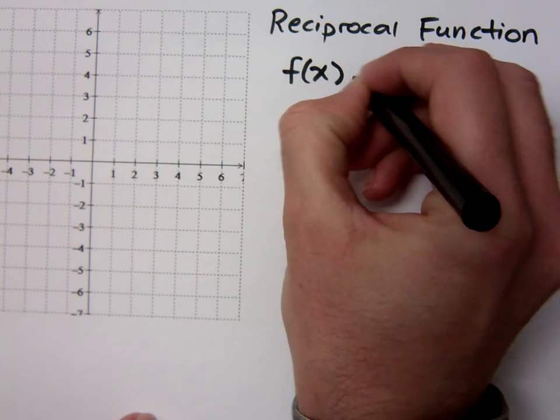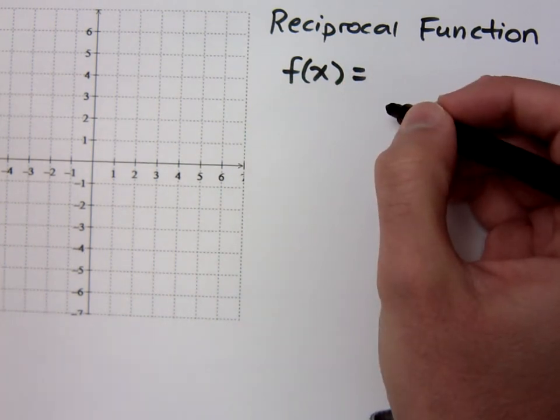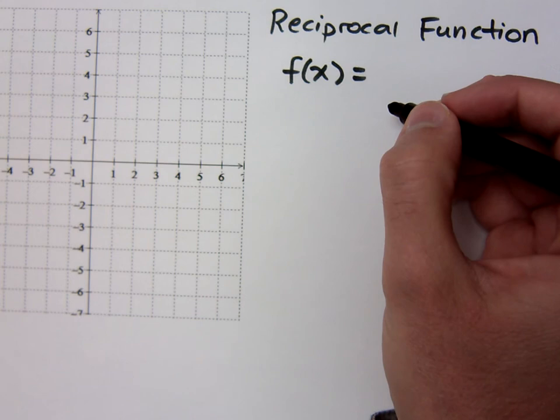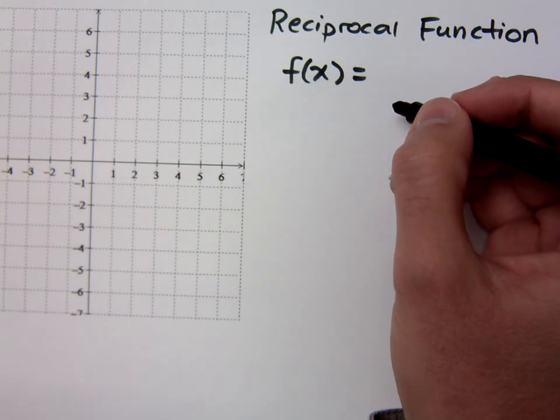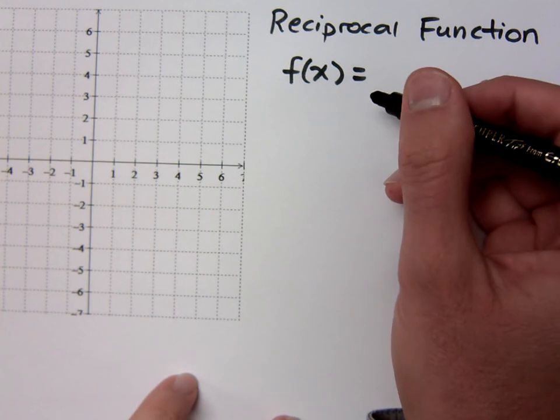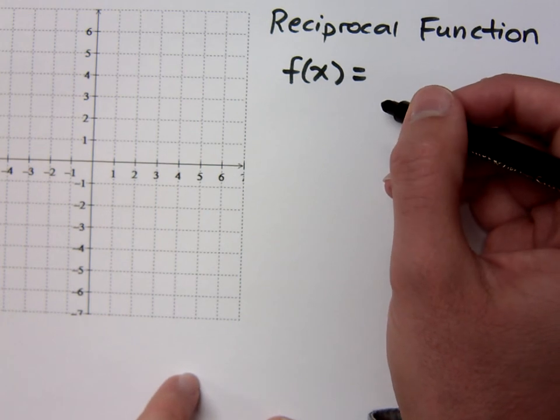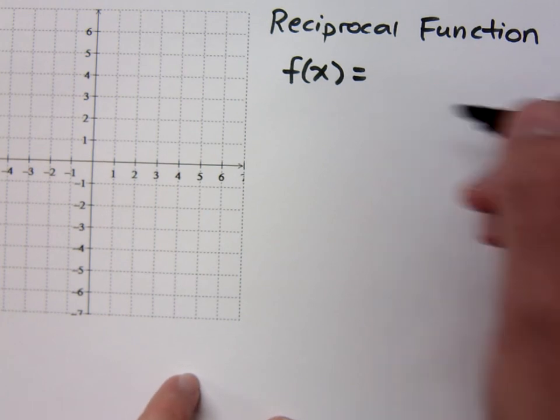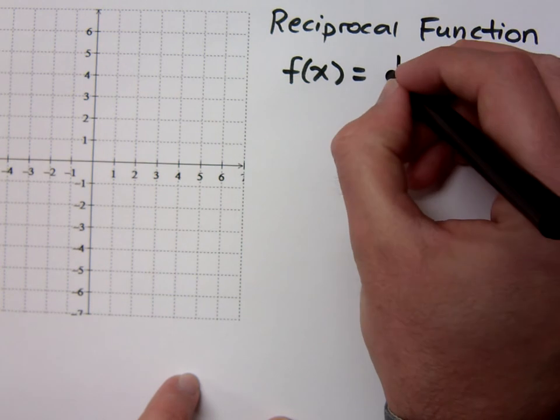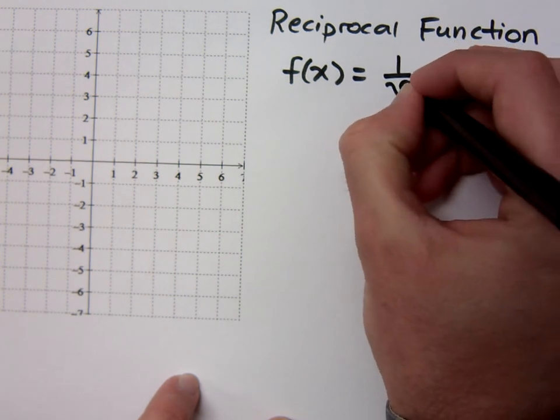If I had the squaring function, what did the squaring function do to your input values? It squared it. What did the cubing function do? It would cube the input values. What do you think the reciprocal function does? It reciprocates. It does the reciprocal of the input values, so that's given by 1 over x.